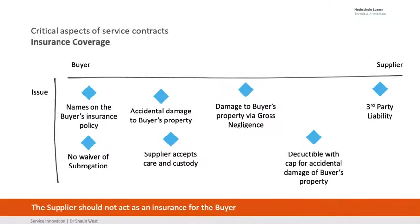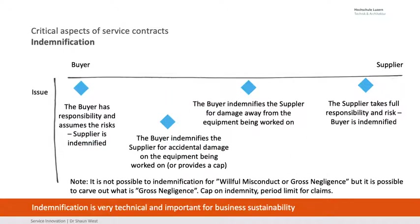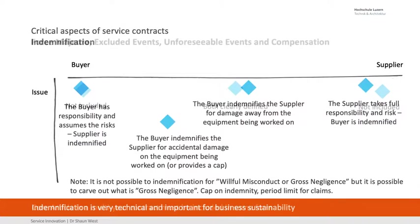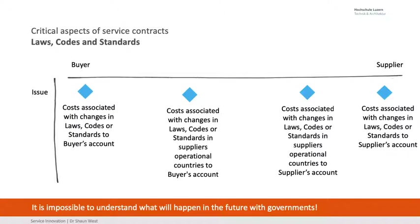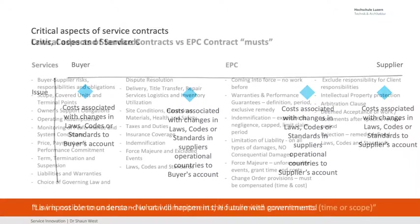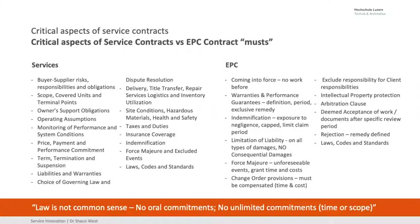Insurance — very, very technical; you need to talk to your legal people about this. Get an expert in to make sure you're not over-insured or under-insured. Indemnification — again a very technical term; you need to understand on a legalistic basis what indemnification you're given. Force majeure: exclude unforeseen events and compensation. What happens if something happens and we have to stop working? Imagine a 20-year contract — anything can happen. Laws and codes — what happens when they change? You never know what the future government will be. Law is not common sense; no oral commitments; no unlimited commitments on time or scope.